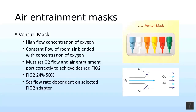Another high flow device is the Venturi mask, also referred to as a Venti mask. It is classified as an air entrainment mask. A Venturi mask mixes oxygen with room air, creating high flow of a desired oxygen concentration. It provides an accurate and constant FiO2 despite varied respiratory rates and tidal volumes.